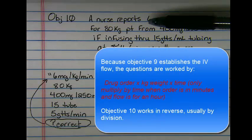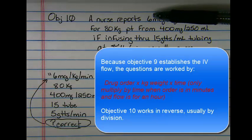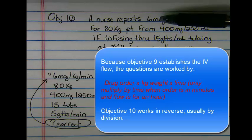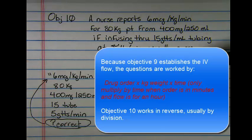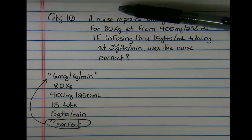For example, if we take this information from this question and figure out what we would flow this IV at to get this order, we would not be answering the correct question.